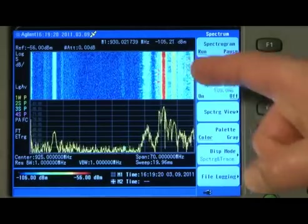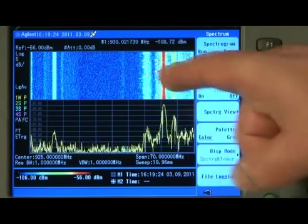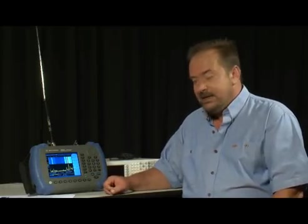The amplitude of the signal is represented by the color on the spectrogram trace. So, blue is a weak signal, and red is a strong signal.